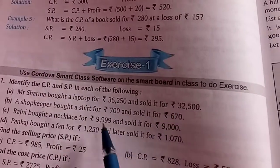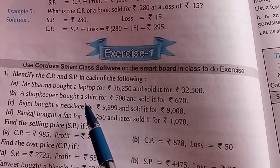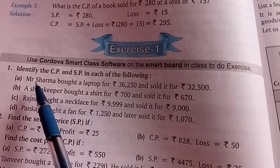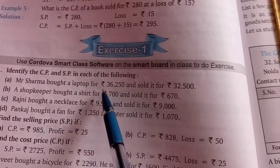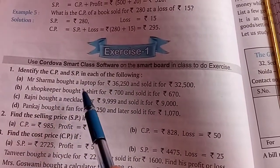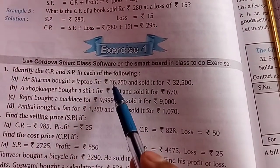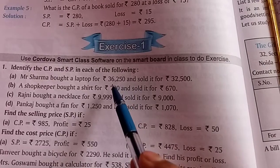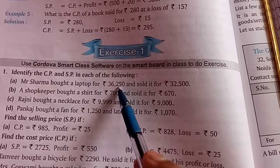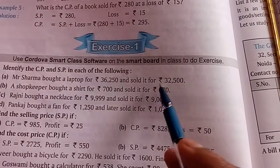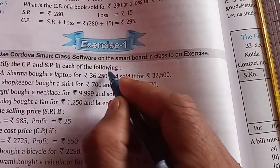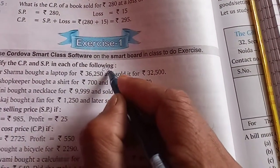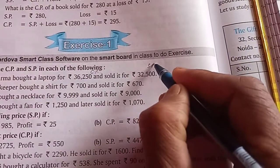Question number one — in this statement we will identify the cost price and selling price. Mr. Sharma bought a laptop for Rs. 36,250. So the cost price is Rs. 36,250, and he sold it for Rs. 32,500. The amount for which something is bought is the cost price, and the amount for which it is sold is the selling price.